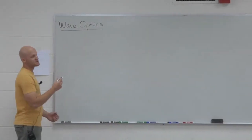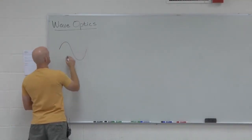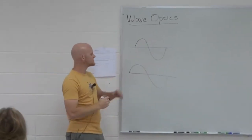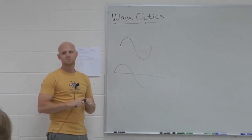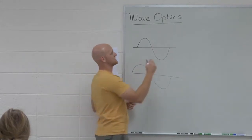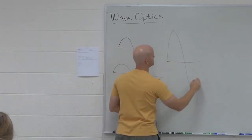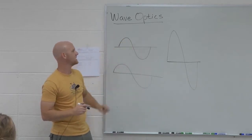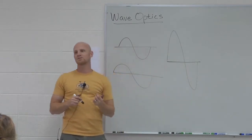Let's talk about wave optics. The first thing you need to understand is interference. If we have a couple of waves that are in phase — positive with positive, negative with negative — what would be the result? You'd get a giant wave. The two waves add together: the positive region gets more positive, the negative region gets more negative. We call that constructive interference.